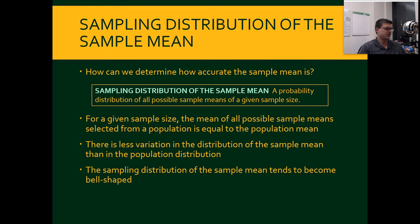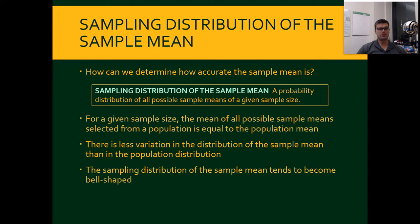In this lecture we're going to be going over the sampling distribution of the sample mean. The sampling distribution of the sample mean is essentially a probability distribution — just like in the previous unit, we had lots of different probability distributions: the uniform, the normal, and the discrete. This really follows more of a normal probability distribution, but it's a probability distribution of all possible sample means of a given sample size.